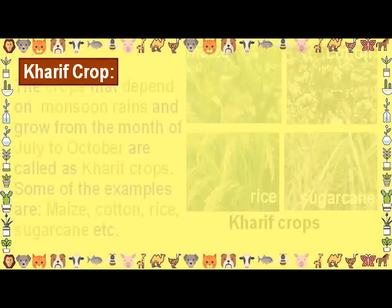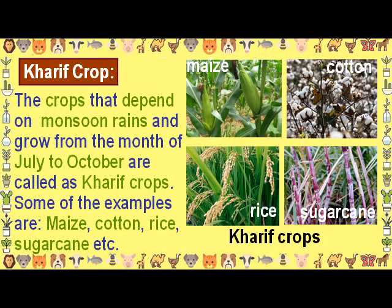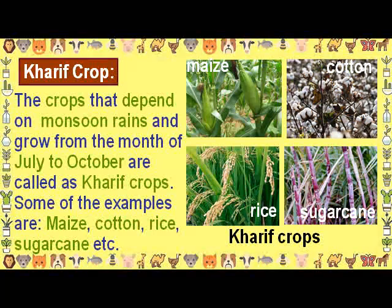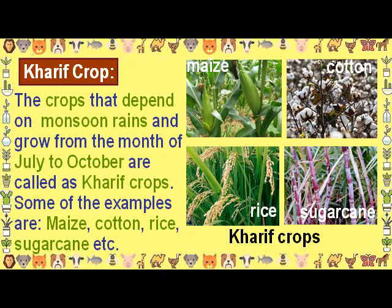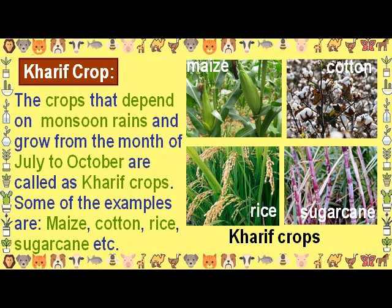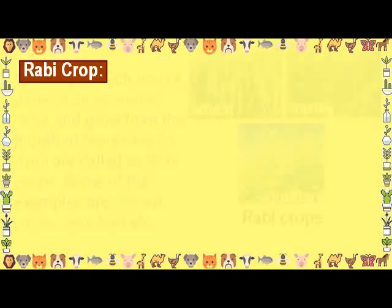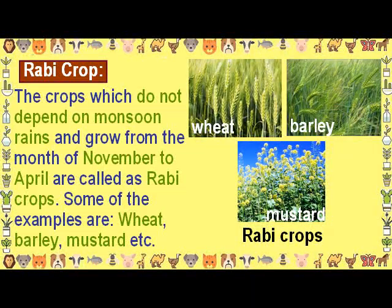Kharif Crops are crops that depend on monsoon rains and grow from the month of July to October. Some examples are maize, cotton, rice and sugar cane. Rabi Crops do not depend on monsoon rains and grow from the month of November to April. Some examples are wheat, barley and mustard.